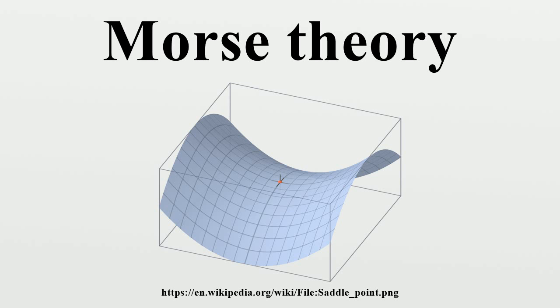Basic concepts: Consider, for purposes of illustration, a mountainous landscape M. If F is the function M to R sending each point to its elevation, then the inverse image of a point in R is simply a contour line. Each connected component of a contour line is either a point, a simple closed curve, or a closed curve with a double point. Contour lines may also have points of higher order, but these are unstable and may be removed by a slight deformation of the landscape. Double points in contour lines occur at saddle points, or passes. Saddle points are points where the surrounding landscape curves up in one direction and down in the other.